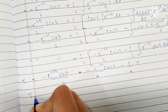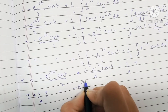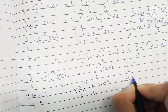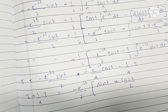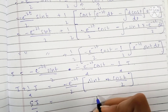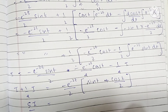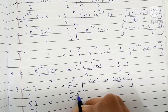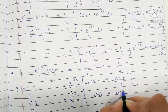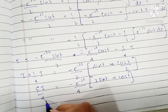Taking this i to the left side, we have i plus 1 by 4 i. Taking minus e raised to minus 2t upon 2 as common, we get sine t plus cos t by 2. This gives 5i by 4. Multiplying numerator and denominator by 2 to combine terms, we can write this as minus e raised to minus 2t upon 4 times the quantity 2 sine t plus cos t.